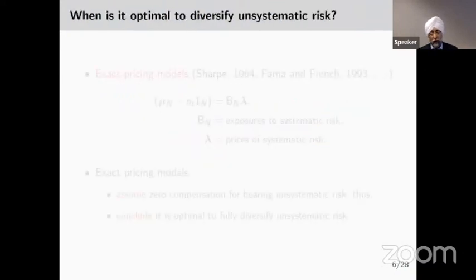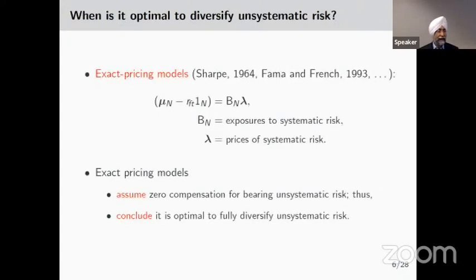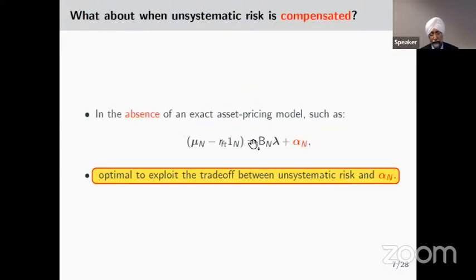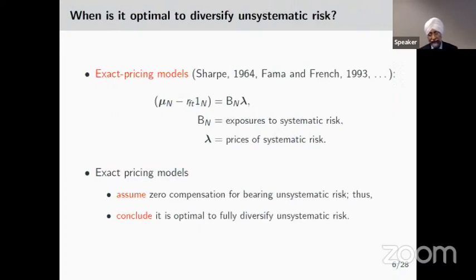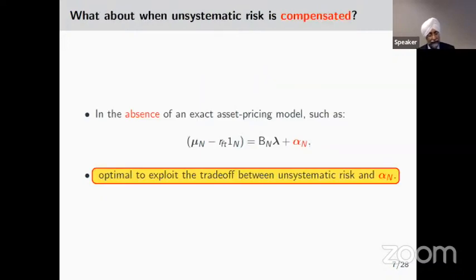Under which conditions would it be optimal to diversify unsystematic risk? Basically, in any exact asset pricing model, expected returns on the left-hand side are explained by risk premia on the right-hand side, so compensation for expected returns depends only on systematic sources of risk. These models give no compensation for unsystematic risk, so it is logical to conclude that it is optimal to diversify it away. But if you are not in a world of exact pricing and you also get additional compensation, it may be optimal to bear unsystematic risk even though it's diversifiable.